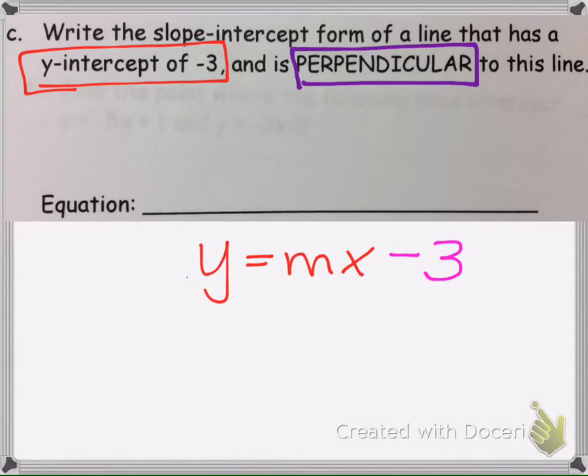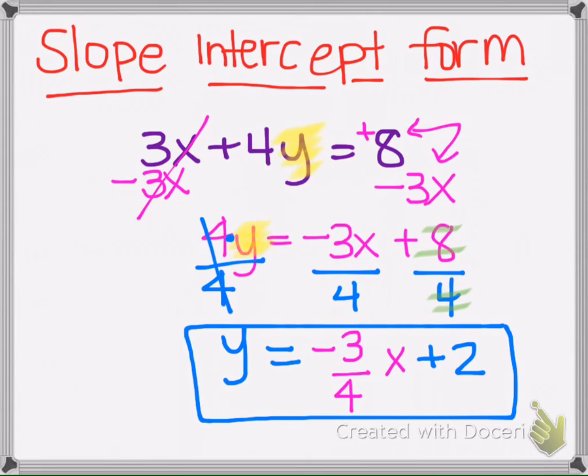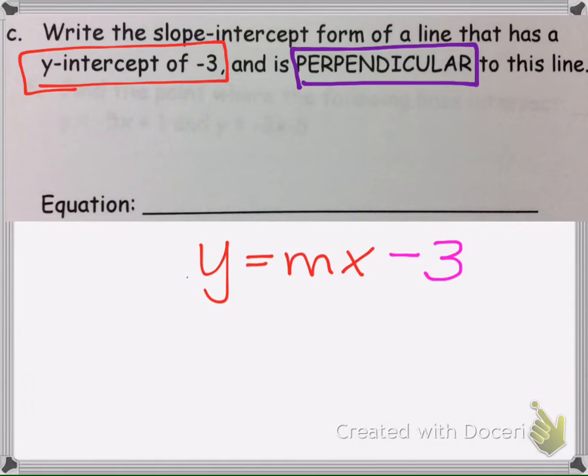And it has to be perpendicular to the line we just graphed. So we know that for two lines to be perpendicular, you have to have one line go up. So if the line goes up, then the one that's perpendicular to it has to go down so that they make the right angle. To have two lines be perpendicular, the slopes of the two lines, one has to be negative, one has to be positive. So if we look back here, this one had a slope that was negative. That means this one's going to have a slope that is positive.